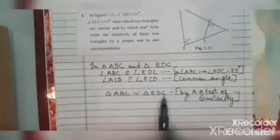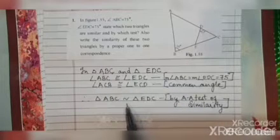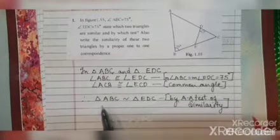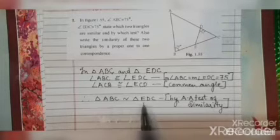So, the two triangles stated similar are triangle ABC and triangle EDC. By which test? By AA test of similarity. The question also asked to write the similarity by proper one-to-one correspondence, which we have done. I hope you have understood this sum.